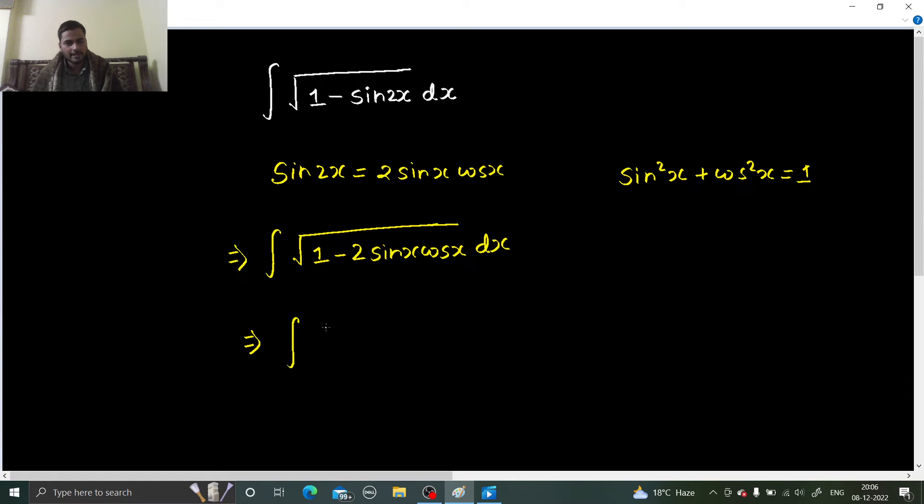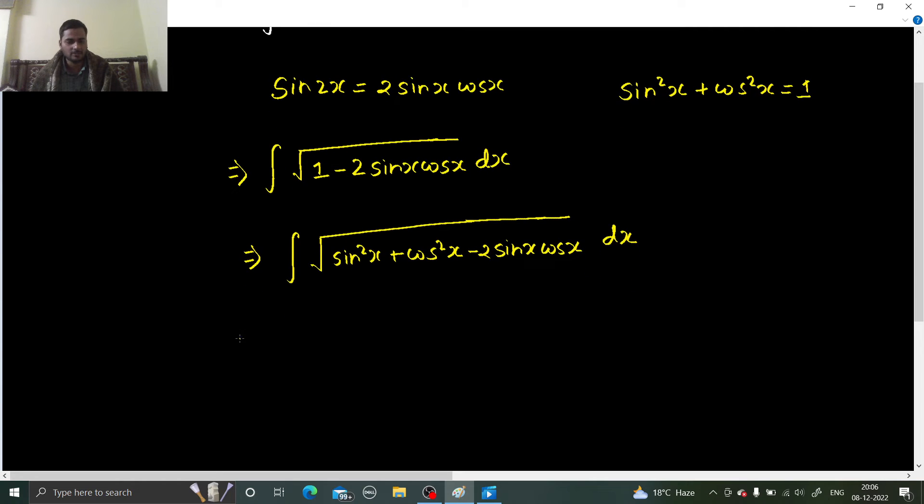So in place of 1 plug in this value, so we are going to get integral of under root sin square x plus cos square x minus 2 times sin x cos x dx. Now again, this is making a perfect square a minus b whole square, so sin x minus cos x whole square.